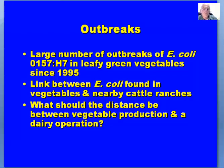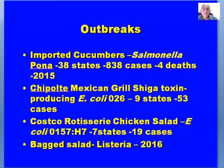A question for you to think about: what should the distance be between vegetable production and a dairy operation? The concern here is the manure produced by cows — a very low percentage of all cows and calves actually have E. coli O157:H7 in their gut system. These are excreted with the manure and can move by groundwater or rainwater to where vegetables or fruits such as strawberries are being produced. Imported cucumbers with Salmonella Poona affected 38 states with 838 cases and four deaths in 2015.